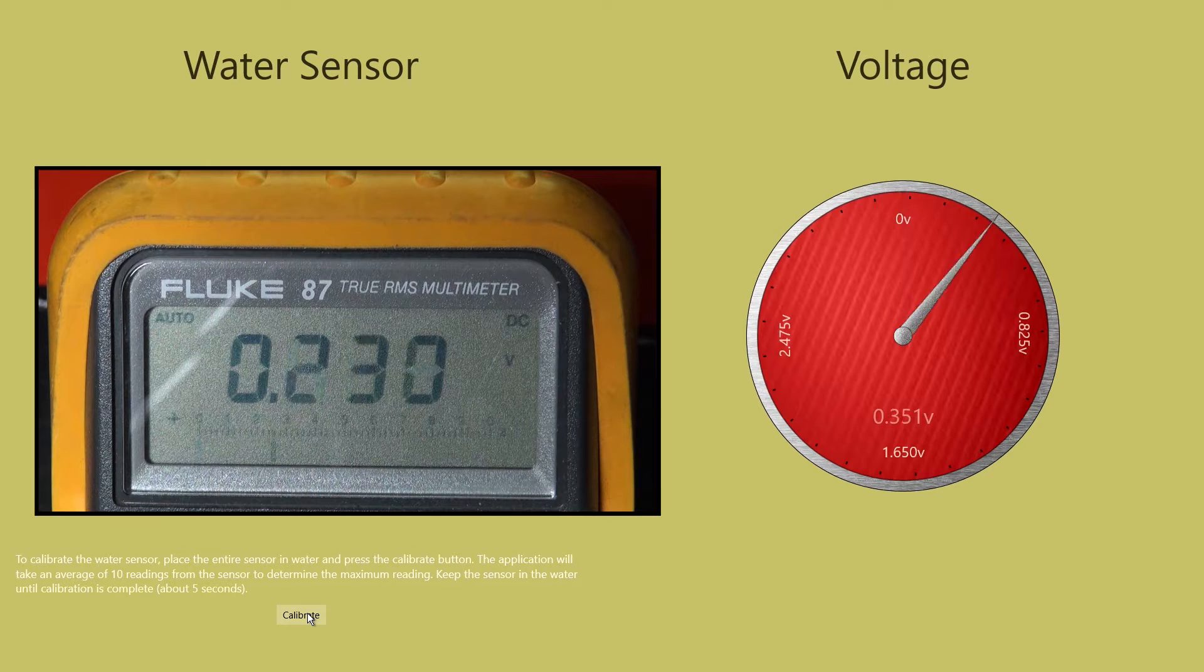Let's start with the voltage reading. Watch as I start to increase the voltage by turning the potentiometer. Notice I have a multimeter connected to the circuit, which you can see on the left. I'm using this to compare the voltage read by the ADC.